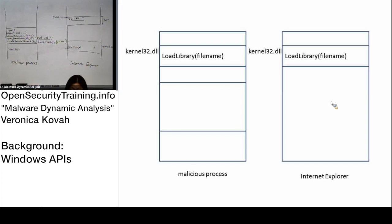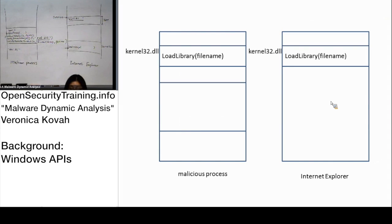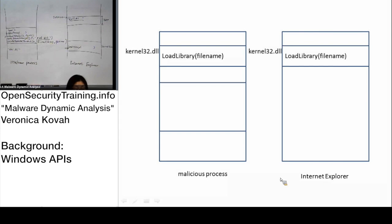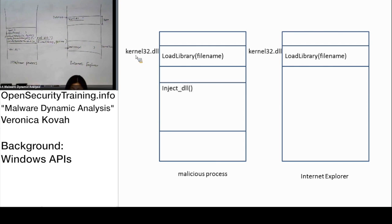Let's see from the beginning. We actually saw this on the whiteboard, but let's look at it in this slide. You have one malicious process on the left side, and on the right side you have a process of Internet Explorer, which is a benign process. That malicious process wants to see what's in the memory of Internet Explorer.